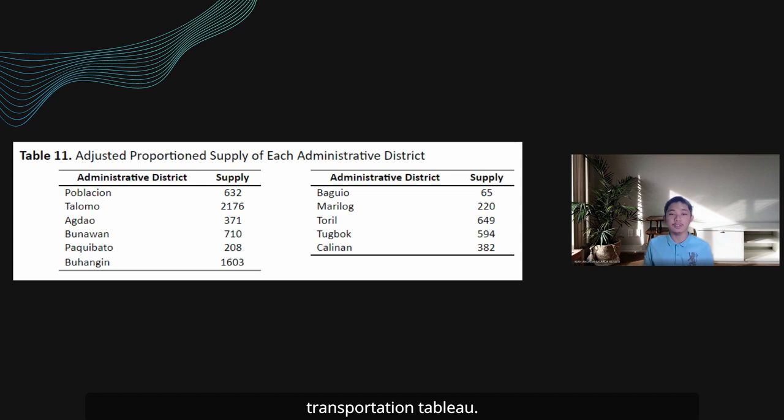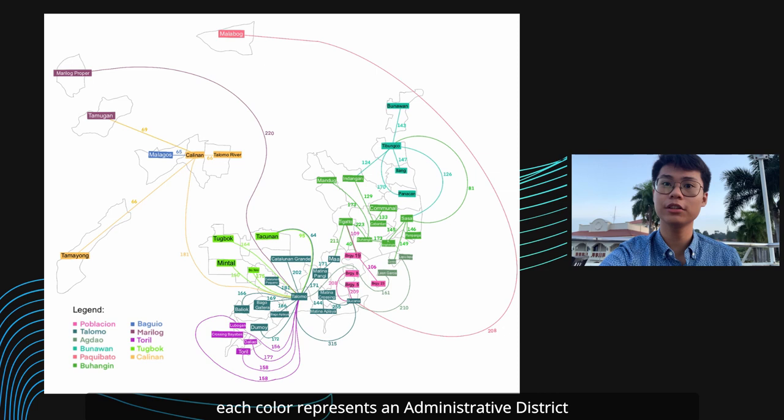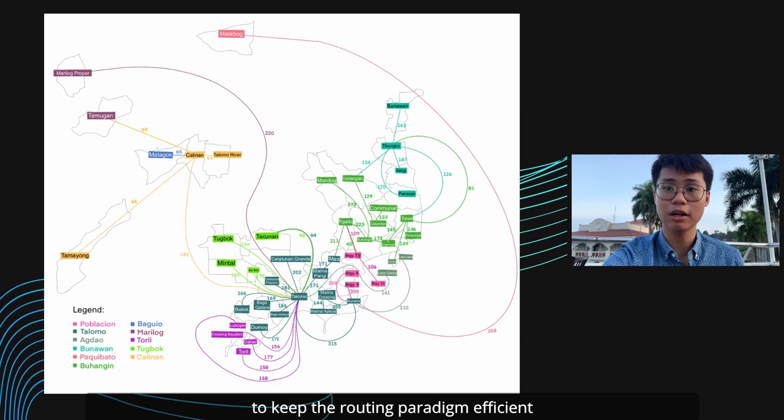For accuracy and efficiency, the new transportation tableau was solved through solving its linear programming model form in LINGO, which is a linear programming software. Combining the transportation tableau's results with a minimum spanning tree formed by Prim's algorithm, the routing paradigm is now complete. In the figure shown, each color represents an administrative district as expressed in the legend, and the minimum number of jeepney vehicles that must operate between each stop to keep the routing paradigm efficient is put beside its corresponding arm.